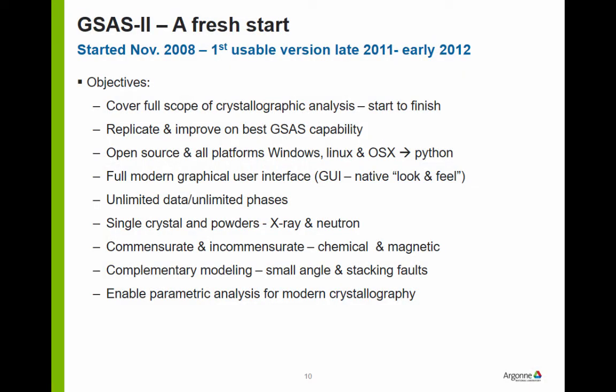GSAS-2 is a fresh start. I began working on it in 2008, and the first usable version appeared in late 2011, early 2012. Note the amount of time it takes — a couple of years of concentrated effort to produce programs like this. The goal was to make it open source, which led to Python. In November 2008 I was 64 years old and that's when I learned Python. So there's hope for everybody.